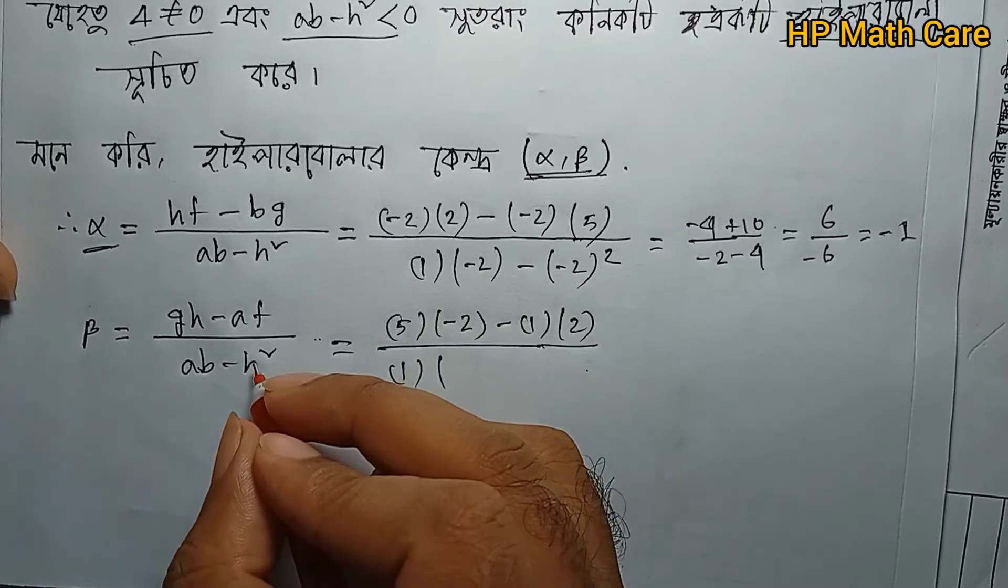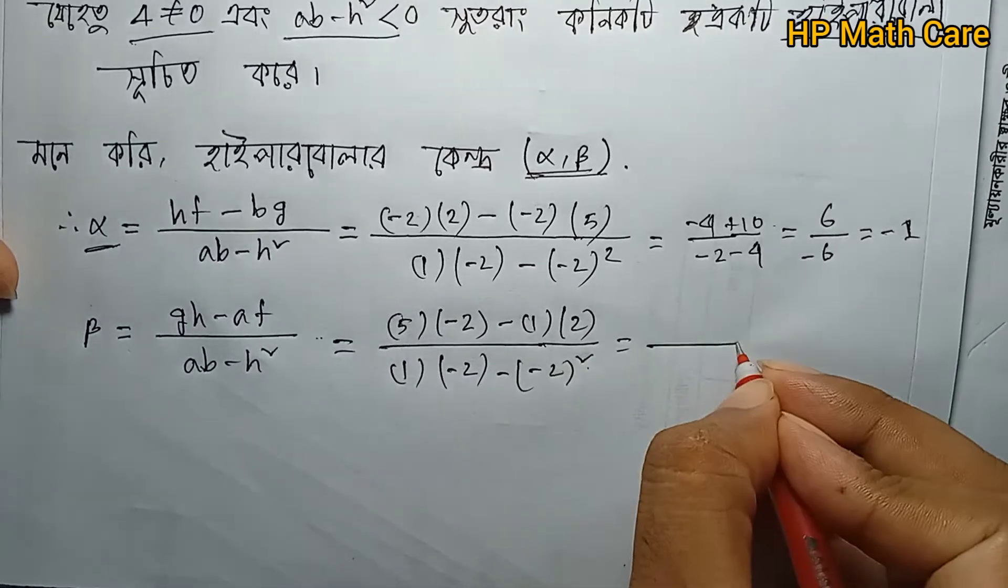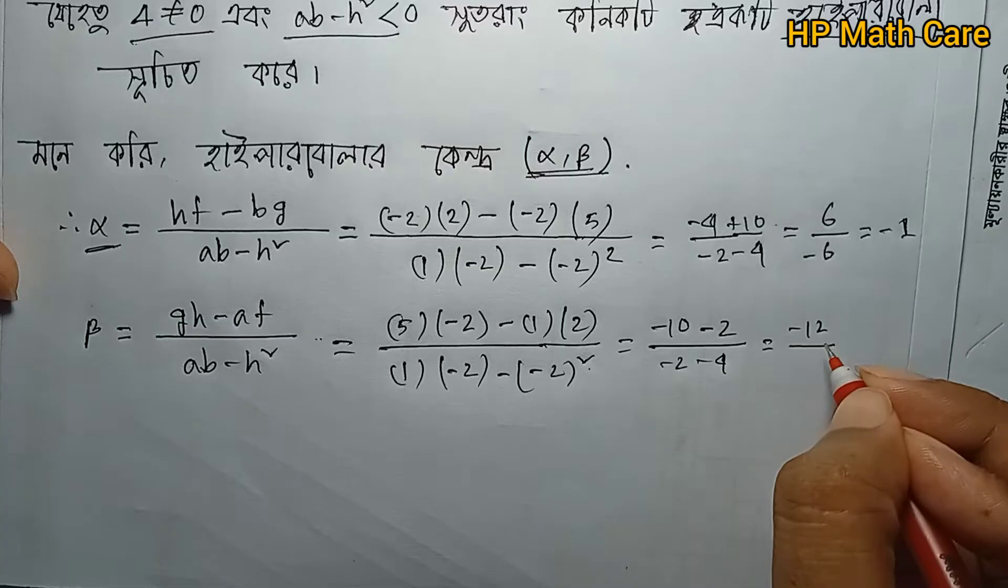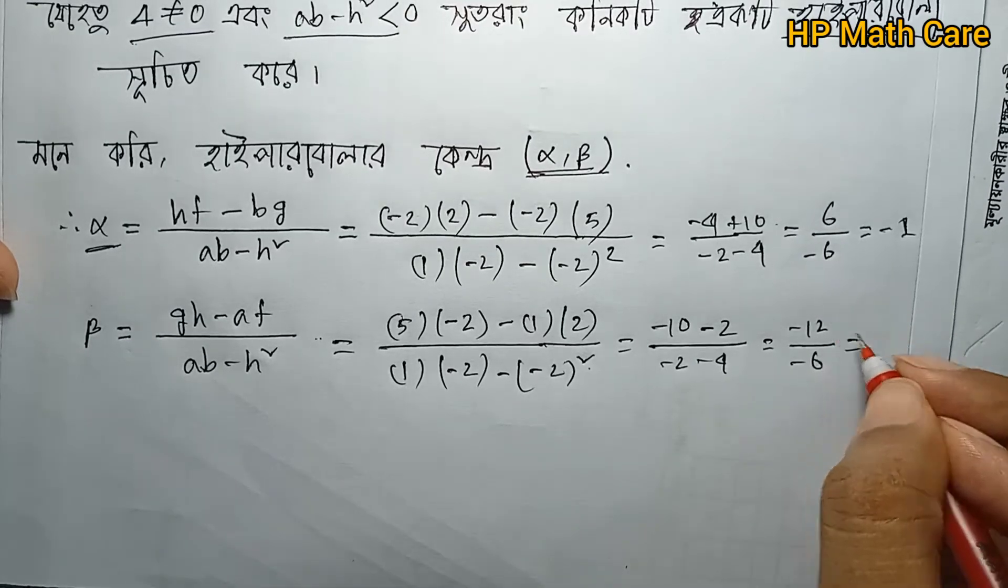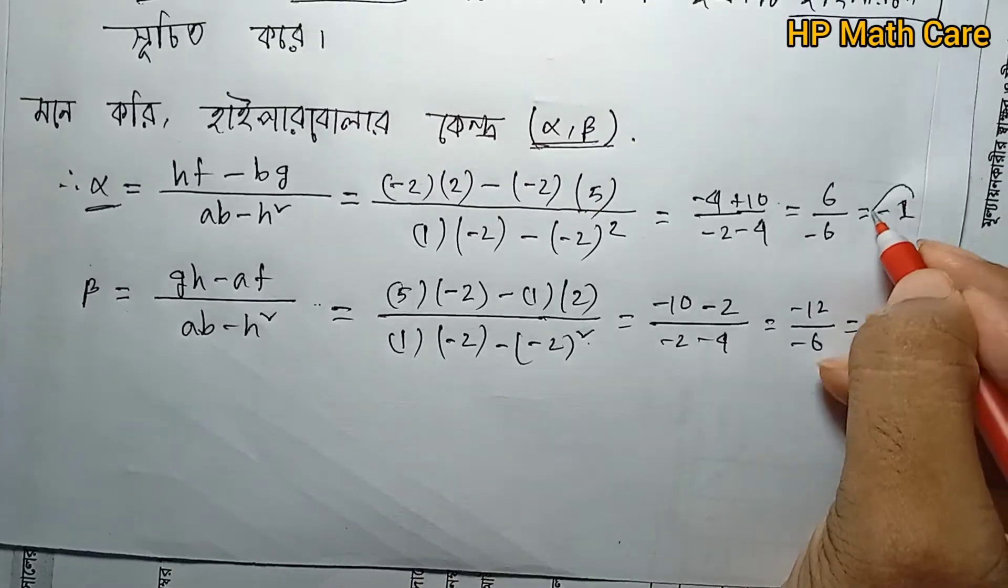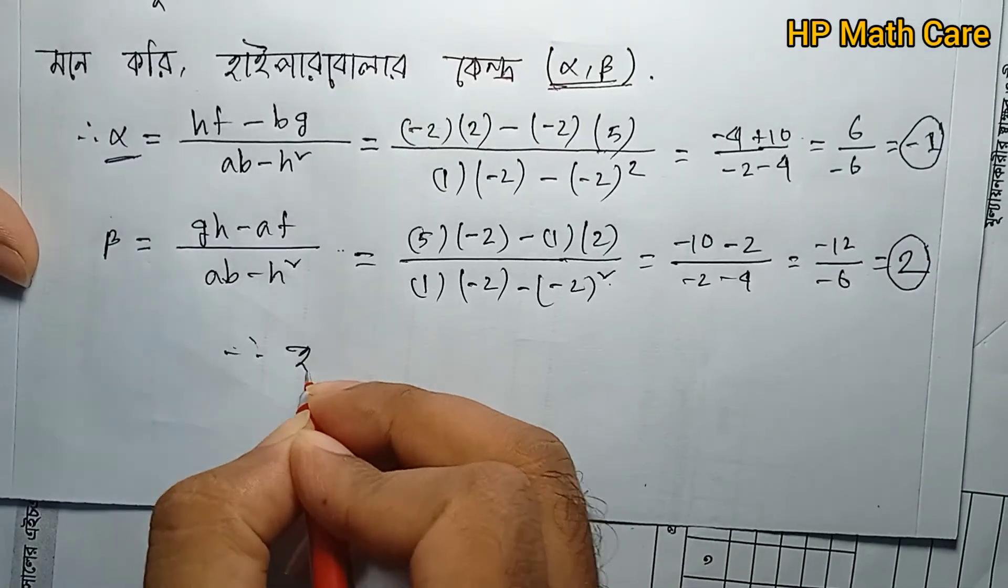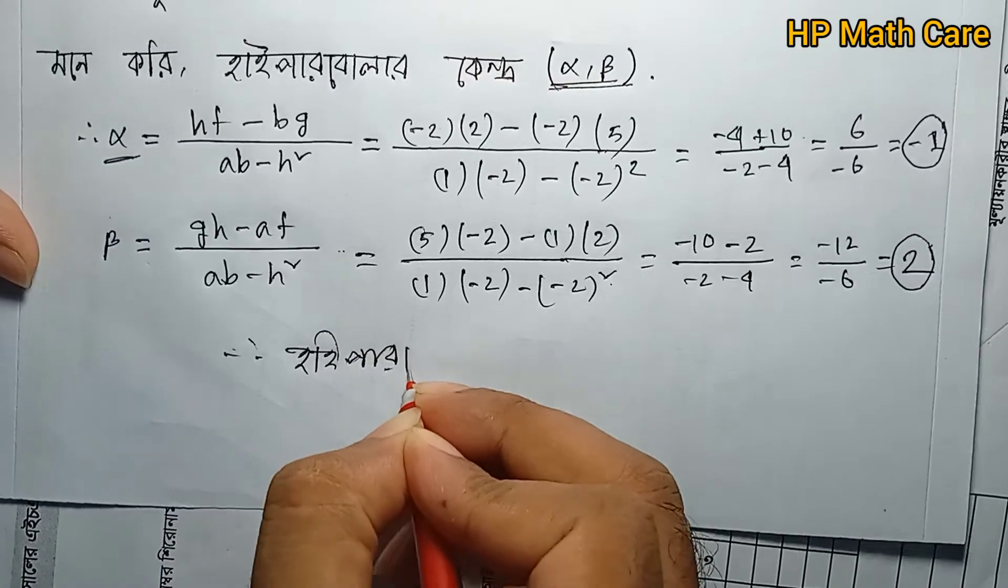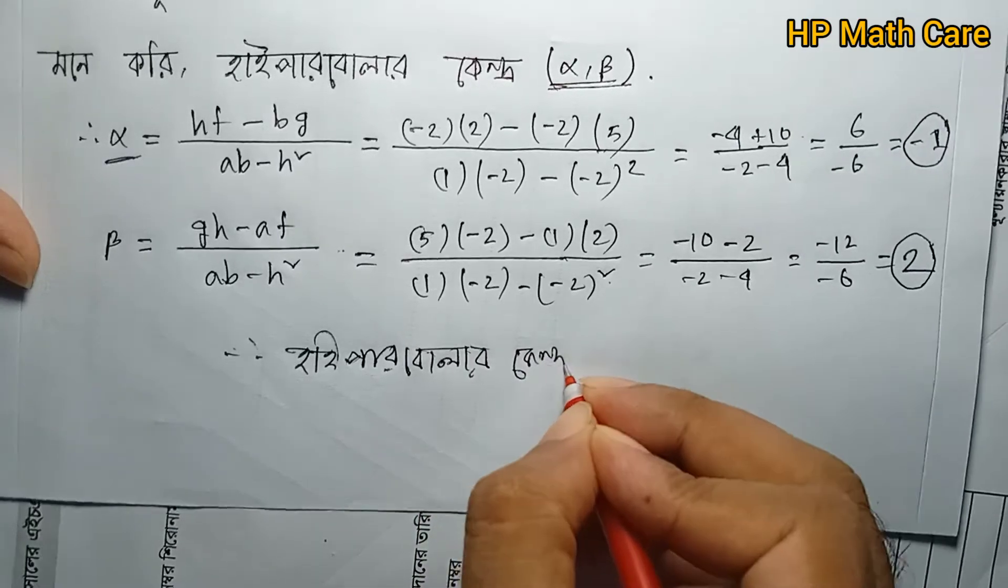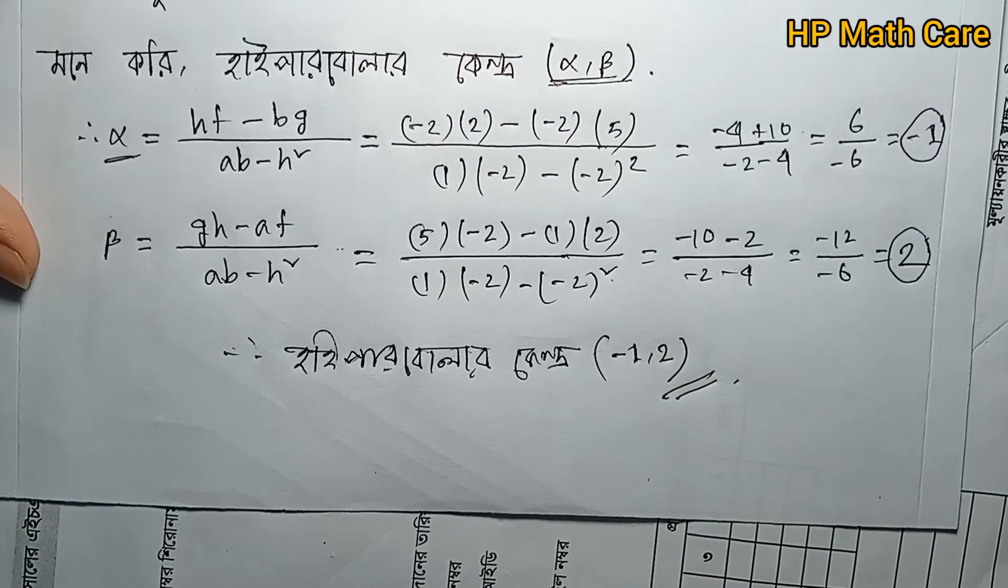This equals (-10 - 2)/(-6) = -12/(-6) = 2. Therefore, the center is at (-1, 2). The answer is: hyperbola with center (-1, 2).